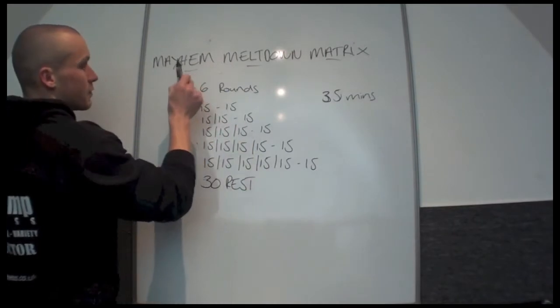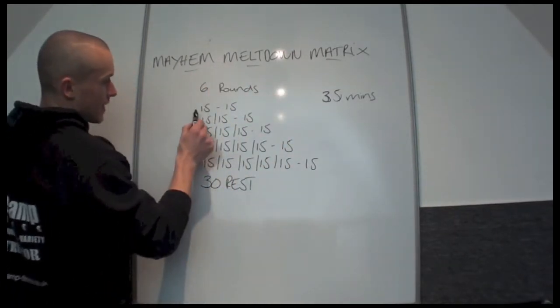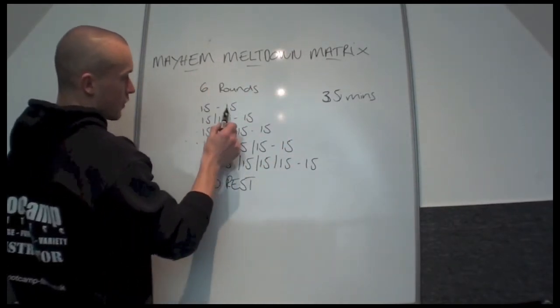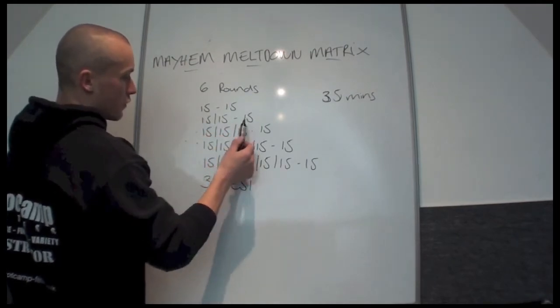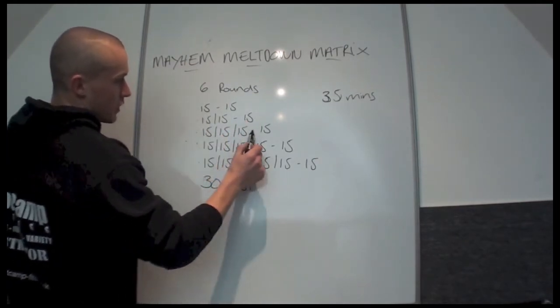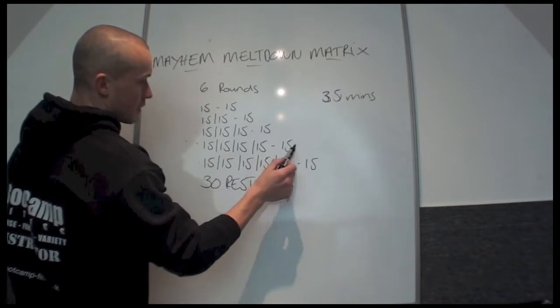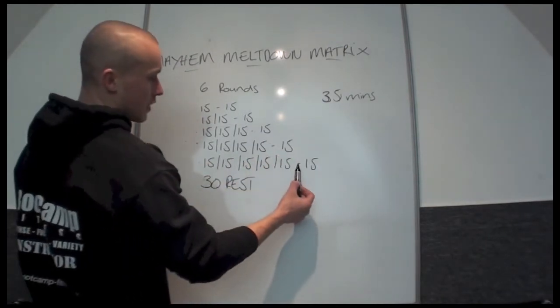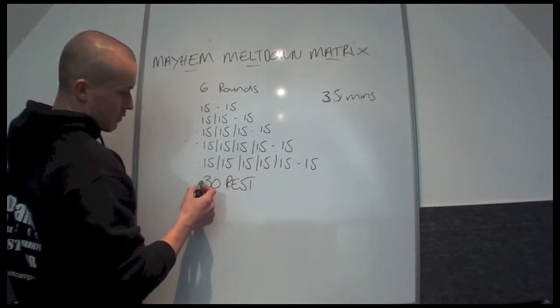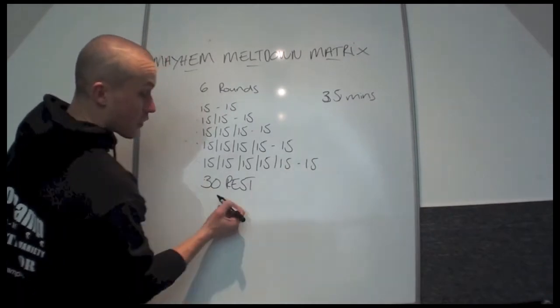The rounds set up exactly the same as the Mayhem Matrix. So you've got an ascender which goes from 15 work, 15 rest, then 15 work, 15 rest, 3 sets of 15, 15 rest, 4 sets of 15, 15 rest, and then 5 sets of 15, 15 rest. After this one you're going to get a 30 seconds rest.